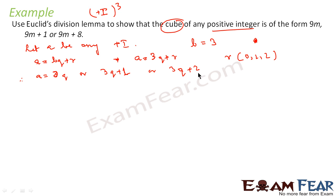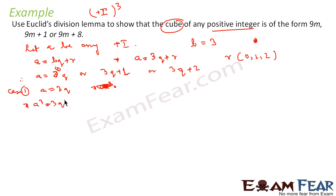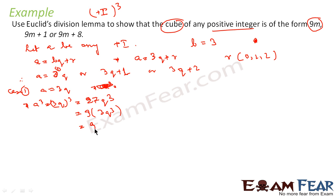Let's take each case separately. Case 1: a equals 3q. Then a³ equals (3q)³ equals 27q³, which is 9 into 3q³. This is nothing but 9m where m equals 3q³. So case 1 gives us the form 9m.